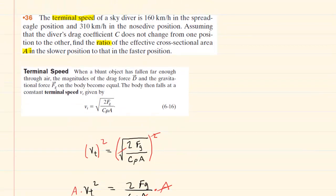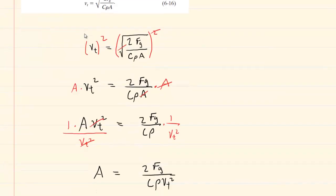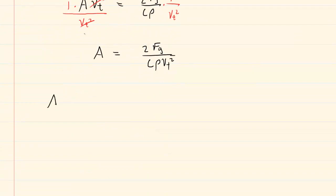Now the question wants the ratio of the cross-sectional area a in the slower position to that in the faster position. So basically it wants the area in the slower position divided by the area in the faster position. For both of those areas, we're going to plug in the expression that we just derived.